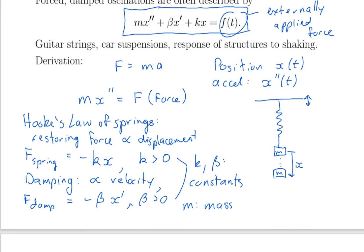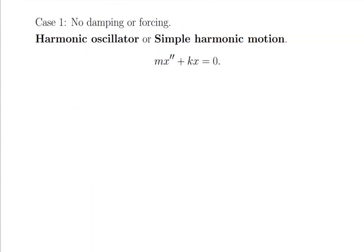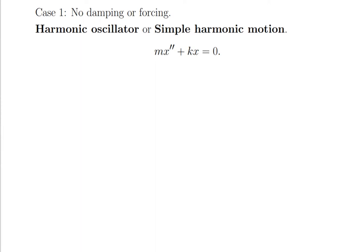So put that all together, get mx double prime, mass times acceleration is equal to minus beta x prime minus kx plus the external force, move those two terms to the left, and you're done. Now the interesting thing is, what do the solutions of this equation look like? We know how to solve it because it's constant coefficient inhomogeneous equation. But instead of just writing down the general solution for the general case, which would be a huge complicated formula with all those parameters, let's build that up through a sequence of special cases.